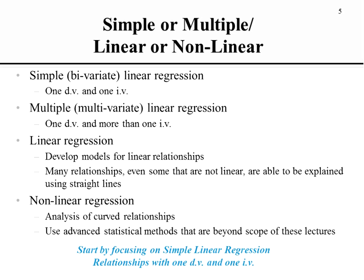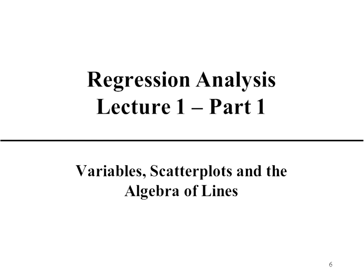Linear regression is when we have a linear relationship — a straight-line relationship — between the different variables. We will sometimes have relationships that don't seem perfectly linear, but we can still use a straight line through those relationships. Then there's nonlinear regression, which is really about curved relationships found a lot in physics and other sciences. For nonlinear regression, there are other statistical methods, and those are beyond what we'll cover in this lecture series.